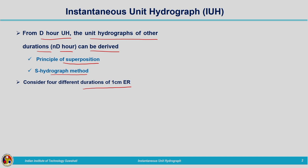Let us see what happens if we reduce the duration. The unit hydrograph is derived for a specific duration D — 1 centimeter of rainfall is occurring for a duration D — so that duration we are reducing as much as possible. Consider 4 different durations of 1 centimeter effective rainfall, where the effective rainfall is 1 centimeter only but the durations are different. We consider them such that D1 < D2 < D3 < D4, varying from D1 to D4, with D1 being the smallest.